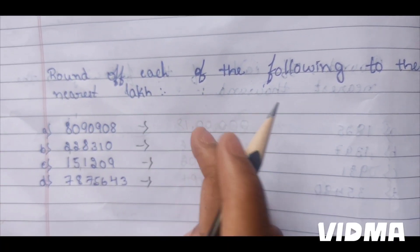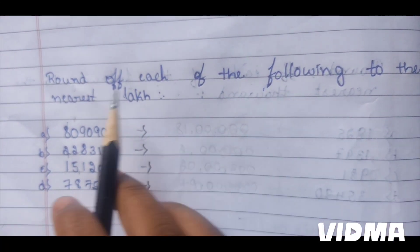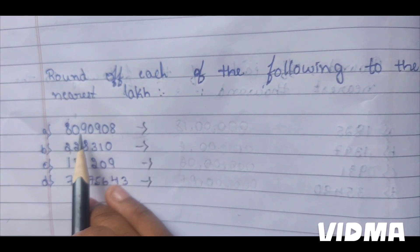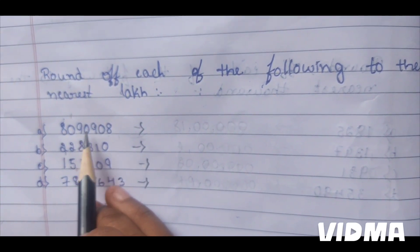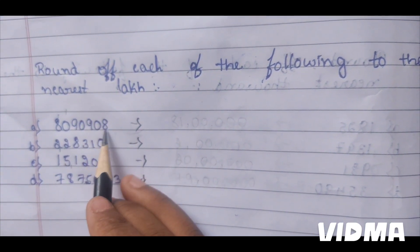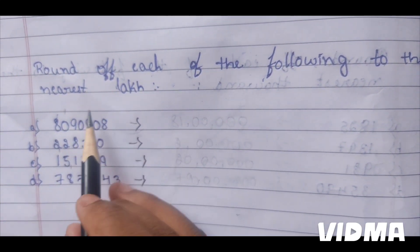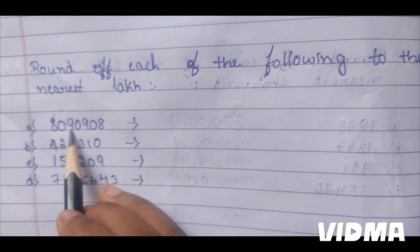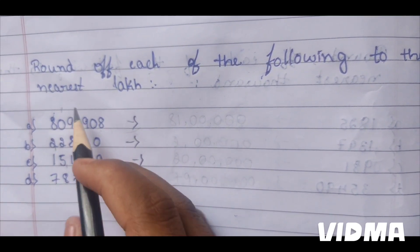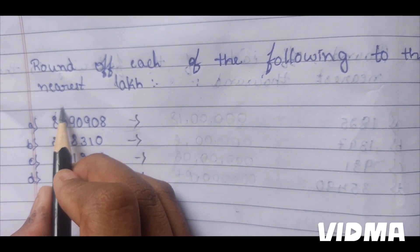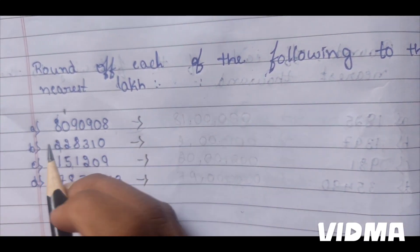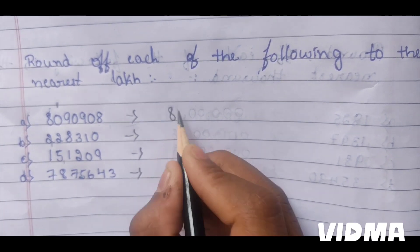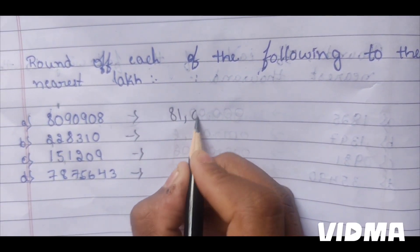Round off each of the following to the nearest lakh. 80,90,908. Here in the 10,000 place, it is more than 5. So we have to add 1 to the lakh place. 81 lakh.